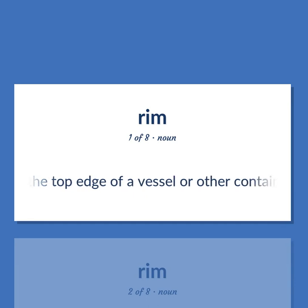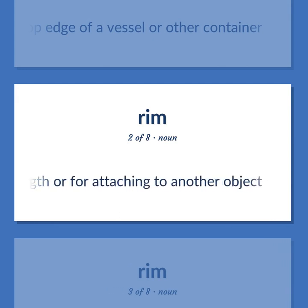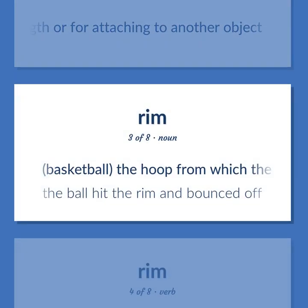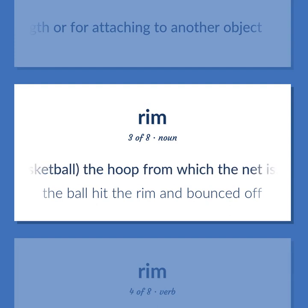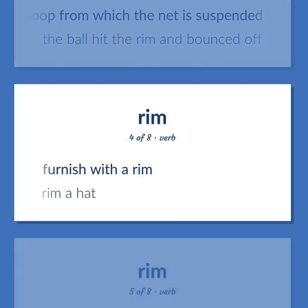RIM: The top edge of a vessel or other container. A projection used for strength or for attaching to another object. In basketball, the hoop from which the net is suspended. Example: The ball hit the rim and bounced off. Also used as a verb: furnish with a rim, as in 'rim a hat.'